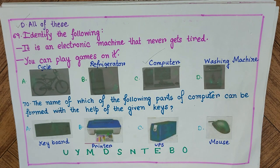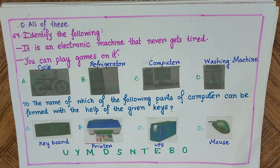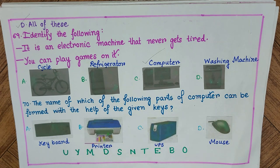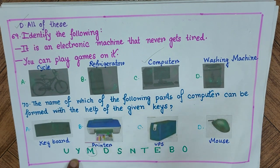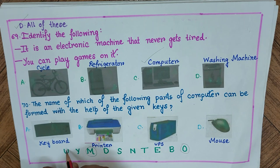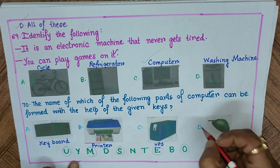Question 70: The name of which of the following parts of a computer can be formed with the given keys? Options: A) keyboard, B) printer, C) UPS, D) mouse. For keyboard, K is missing; for printer, P is missing; for UPS, P is missing. Mouse can be formed: M-O-U-S-E — all letters are available. The answer is D) mouse.